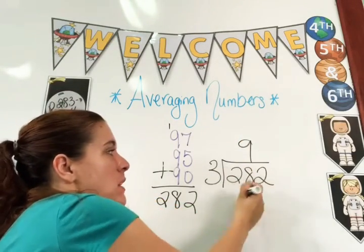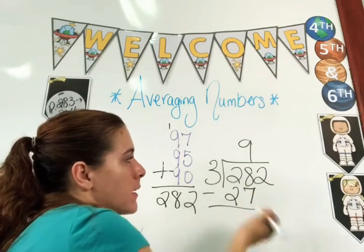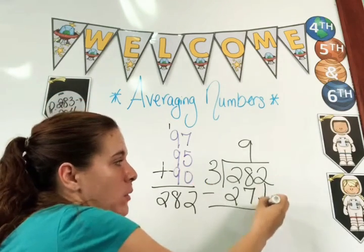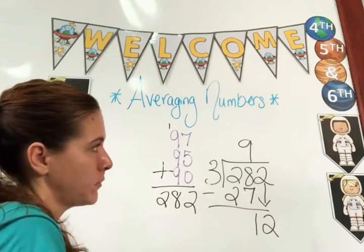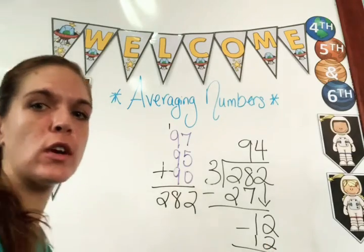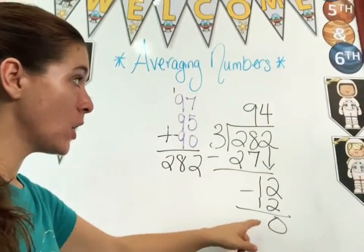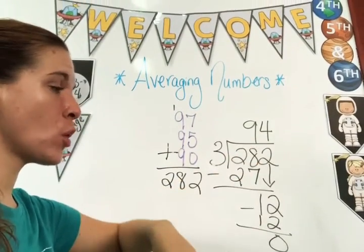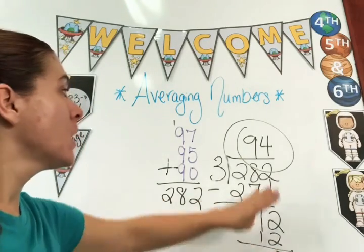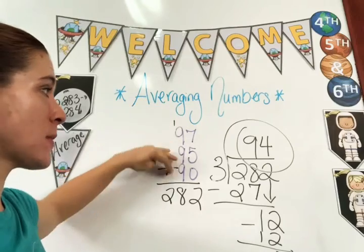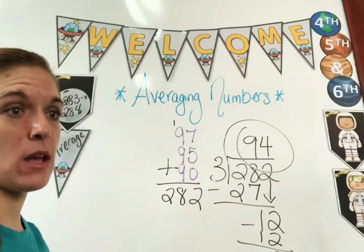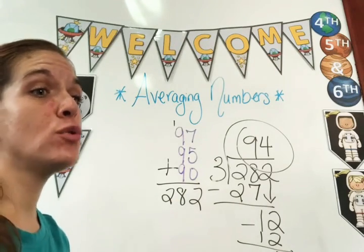Nine times three is 27. Subtract: 28 minus 27 is 1. Is 1 less than 3? Yes — that's your comparison. Bring down 12. 12 divided by 3 is 4. Four times three is 12. 12 minus 12 is 0. Is 0 less than 3? Yes. Can you bring down? No. So your answer is 94. Does that make sense? Is it bigger than 97? No. Is it smaller than 90? No. So this number makes sense — your average is 94.